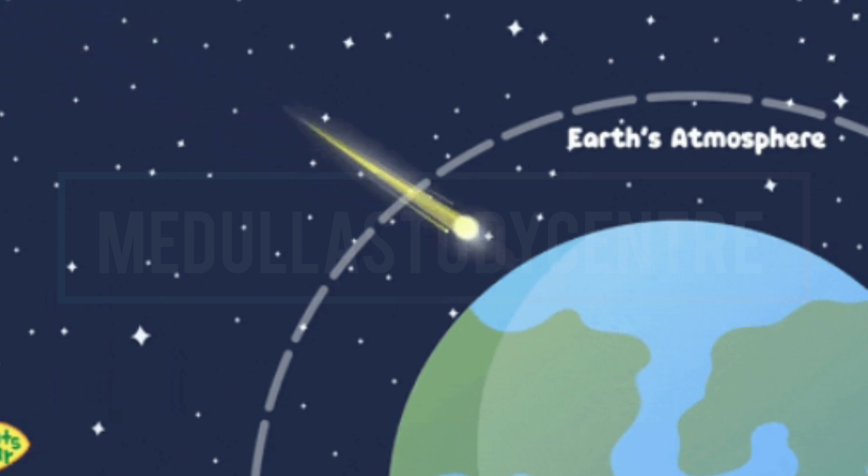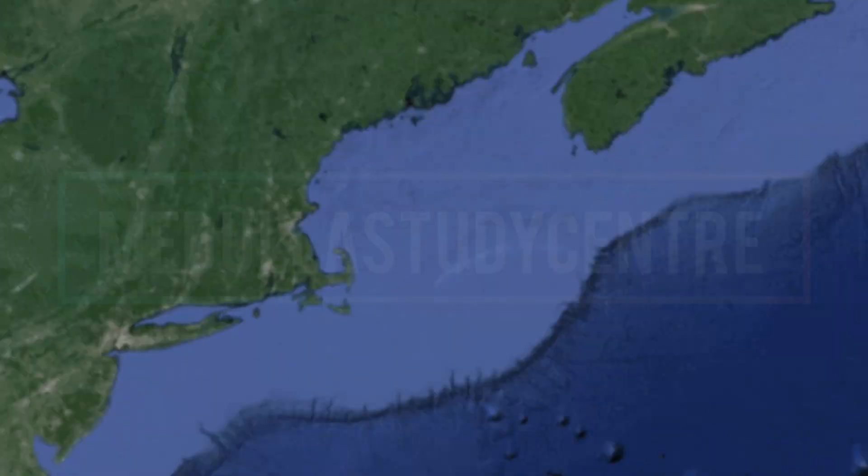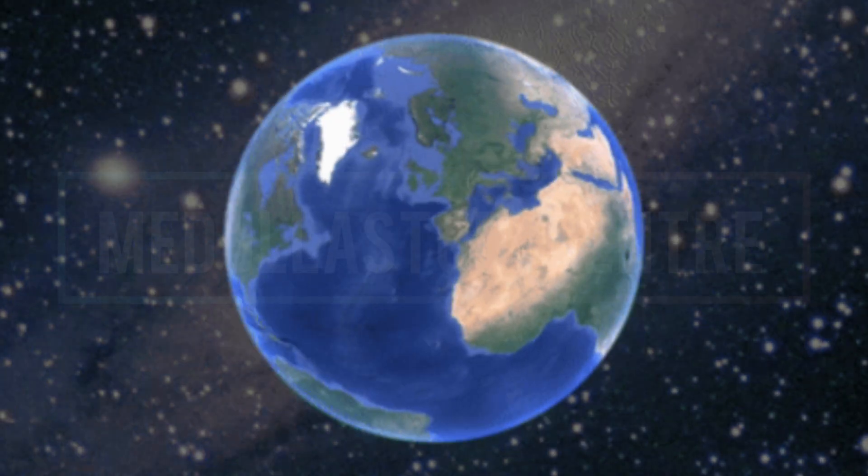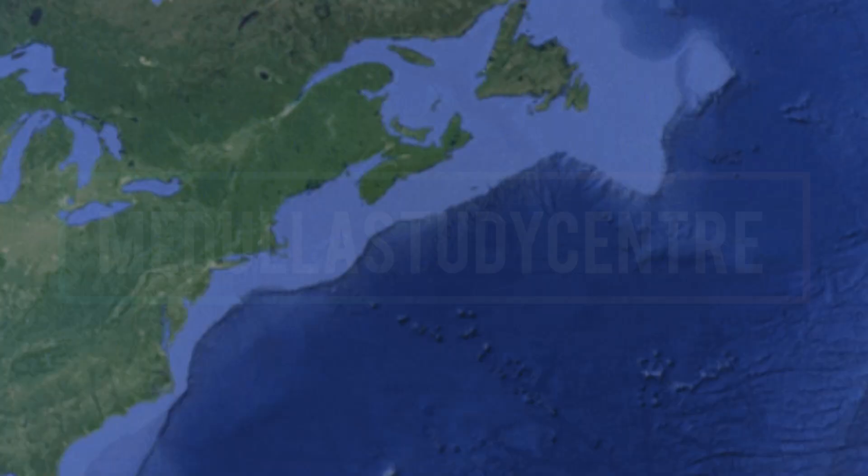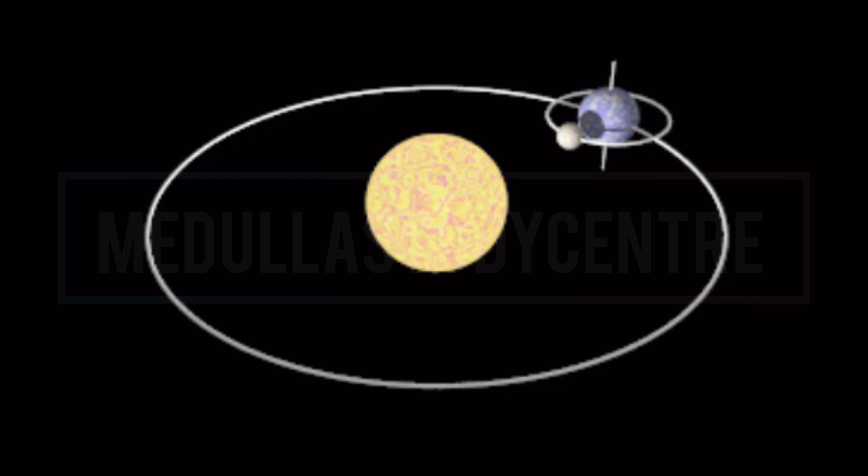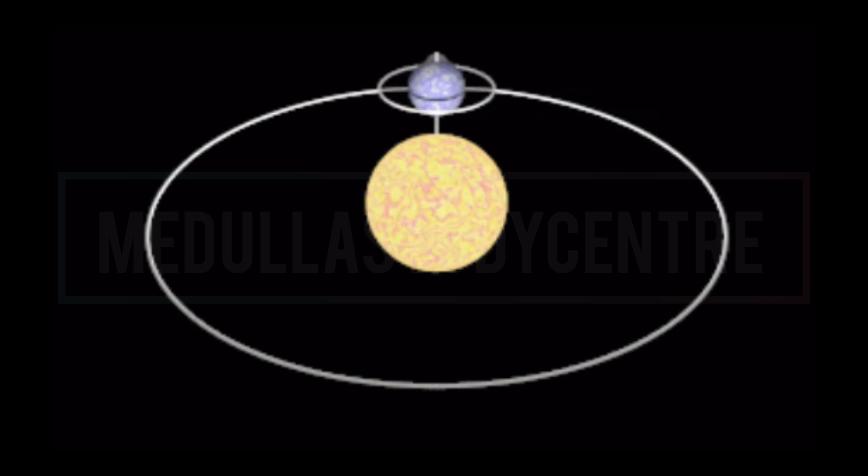One interesting thing is that our Earth is also called blue planet because when you will see Earth from the space, it looks blue due to the presence of water on it. It has one satellite called moon which we can see in the night sky which moves around the Earth.